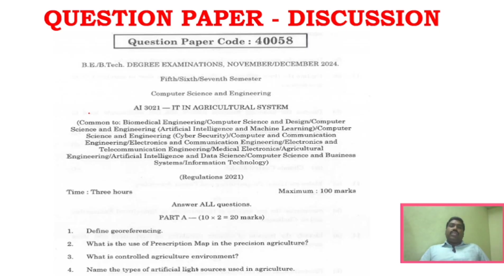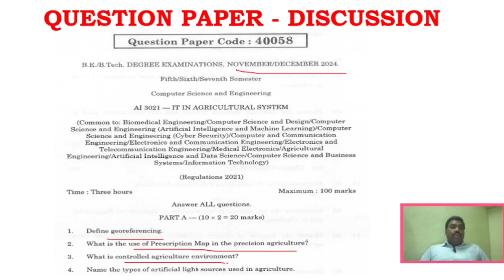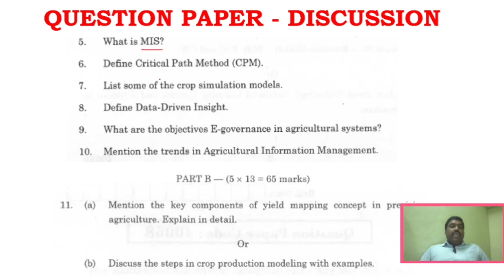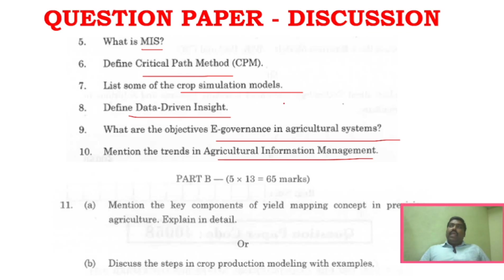Now we will see question paper discussion for the November/December 2024 question paper. For the two-mark questions: define georeferencing, what is the use of a prescription map in precision agriculture, what is controlled agriculture environment, name the types of artificial light sources used in agriculture, what is MIS, critical path method, crop simulation models, data driven insight, e-governance in agriculture systems, and agriculture information management. About 60 to 70% of marks come from two-mark questions.